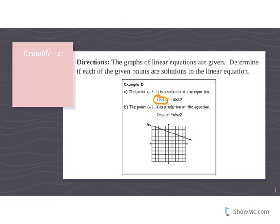Let's check the next point: is (-1, 4) a solution of the equation? Go to the left one and then up four. It's actually right above the line — very, very close, but it's not actually touching the line. It has to be physically on that line, and in this case it is not.